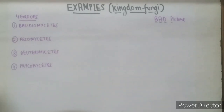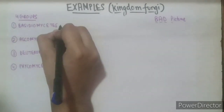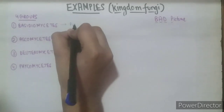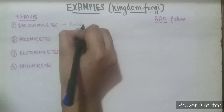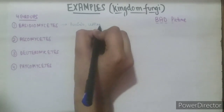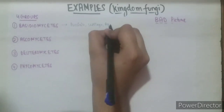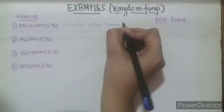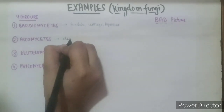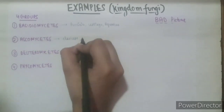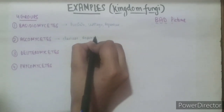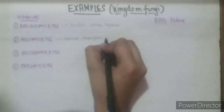Now let's come to the examples of these groups. The examples of Basidiomycetes are Puccinia, Ustilago, and Agaricus. Examples of Ascomycetes are Claviceps, Aspergillus, and Neurospora.